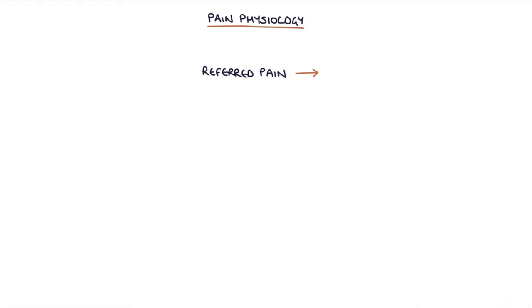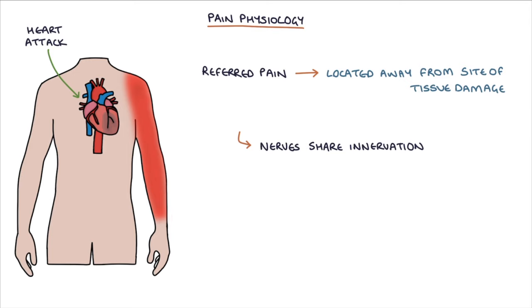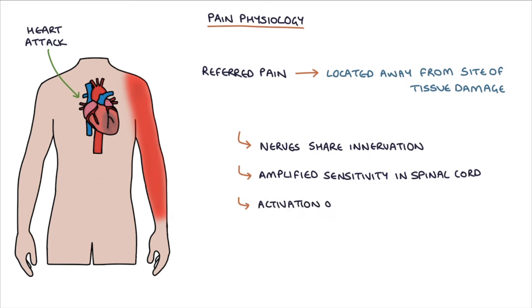Referred pain refers to pain experienced in a location away from the site of tissue damage. For example, patients with a heart attack may have pain in their left arm. There are several possible explanations for referred pain, including nerves that may share the innervation of multiple parts of the body, for example the heart and the arm; pain in one area amplifying the sensitivity in the spinal cord to signals from other areas; and activation of the sympathetic nervous system in response to pain resulting in pain in other areas.